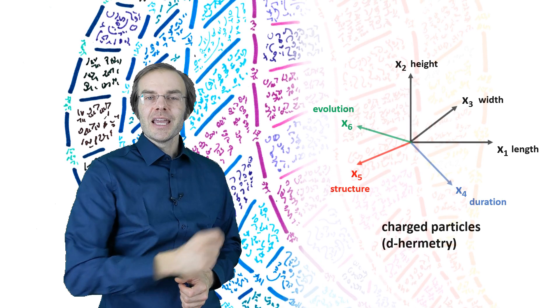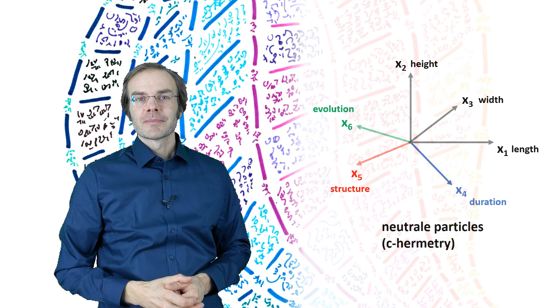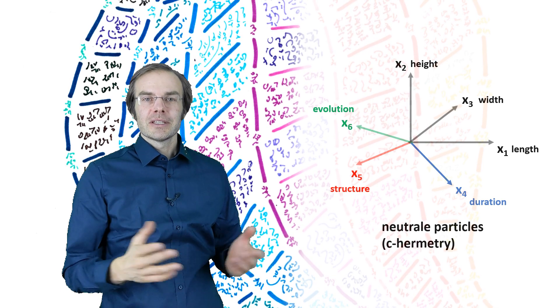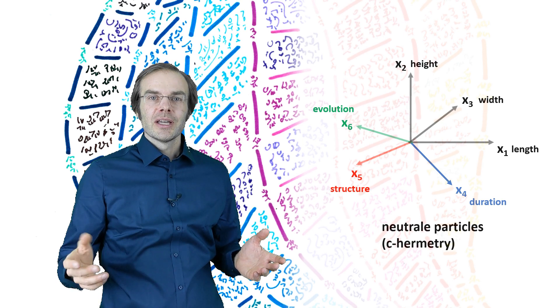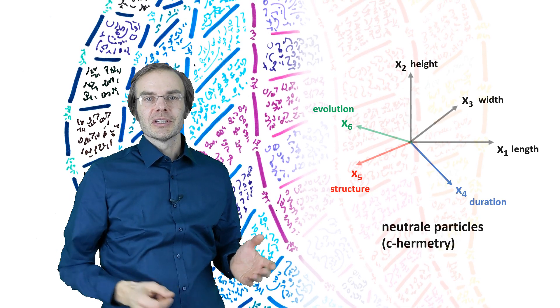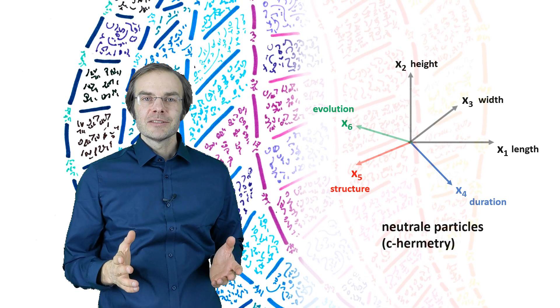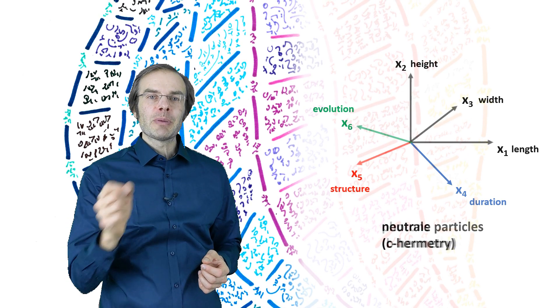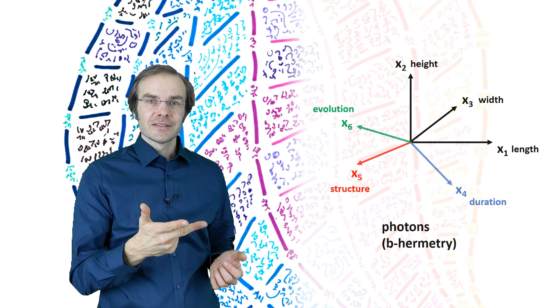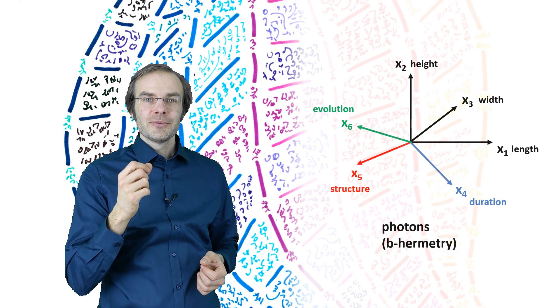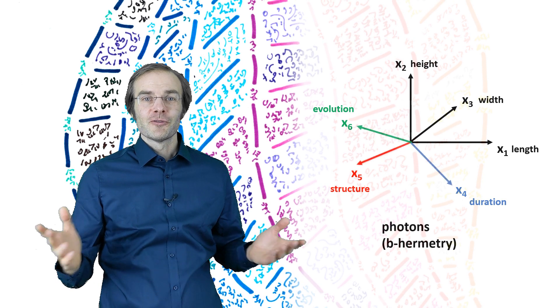If time does not partake in this condensation, we have as a result neutrons or generally neutral, not electrically charged ponderable elementary particles. The next case would be that the spatial dimensions do not partake in the condensation. So only four, five and six deform. And this results in light photons.